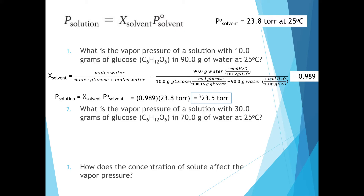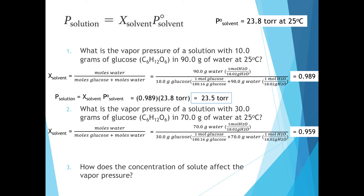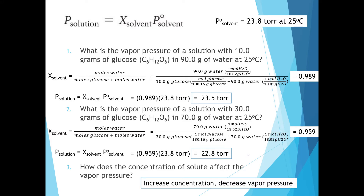As predicted by Raoult's law, the vapor pressure of the solution, 23.5 torr, is less than the vapor pressure of the pure solvent. Let's increase the concentration of our solute — instead of 10 grams of glucose, we'll use 30 grams and see how the vapor pressure decreases even more. The mole fraction of solvent is lower because there's less water per amount of solution: 0.959 in this case. Multiplying by the vapor pressure of pure solvent gives a vapor pressure of 22.8 torr. So the higher the concentration, the lower the vapor pressure. As we increase the concentration of our solute, the mole fraction of water decreases, resulting in a smaller vapor pressure compared to pure solvent.